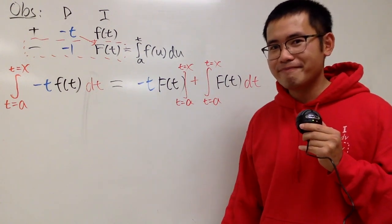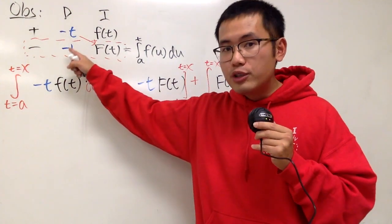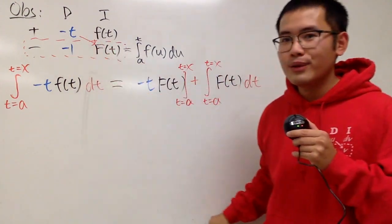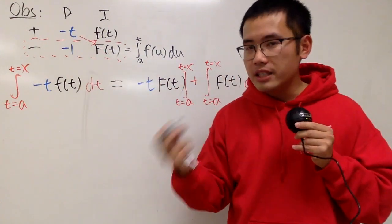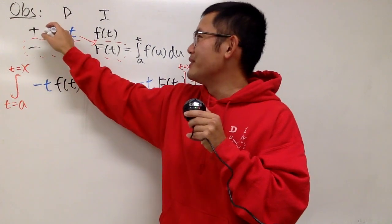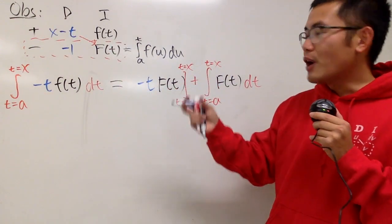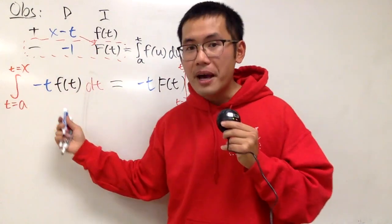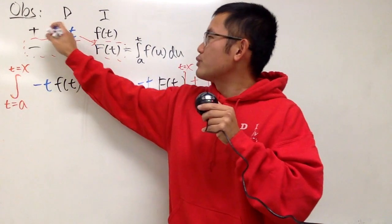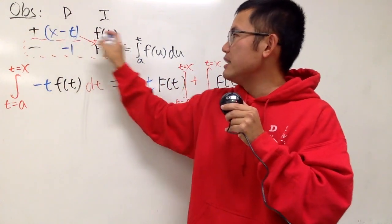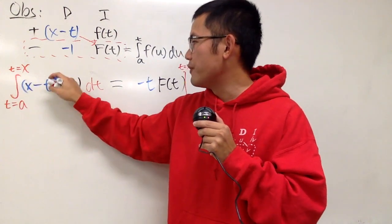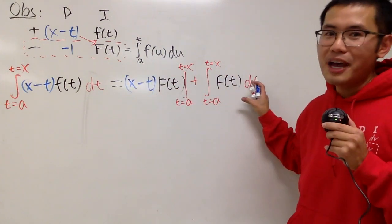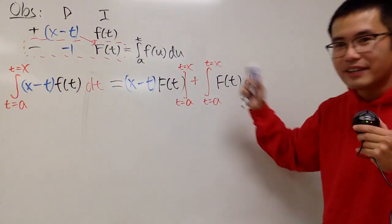But can we somehow change this? Yes. Because remember, I just need to end up with negative 1 right here. So we have to ask ourselves, derivative of what in the t world will give me negative 1? Well, earlier we said it's negative t. But in the t world, x is a constant. So can we actually put x minus t right here? Yes. So, remember we're constructing the formula — this is exactly what we're trying to do. Now, if we have x minus t, I just have to come back and fix this a little bit. Because this right here, multiplying the first row, I will have x minus t times little f of t, and that will be instead of the integral. And the function part for the second part stays the same.